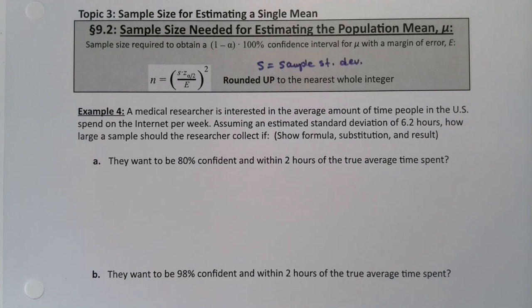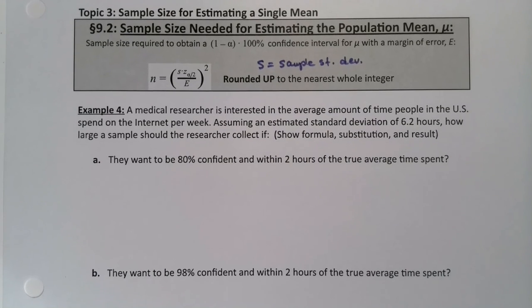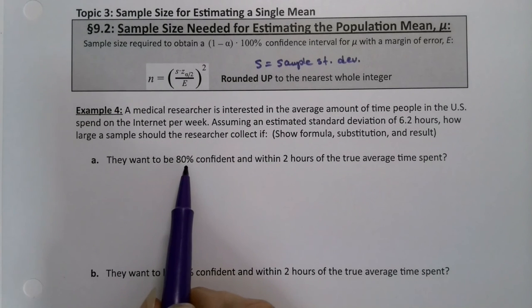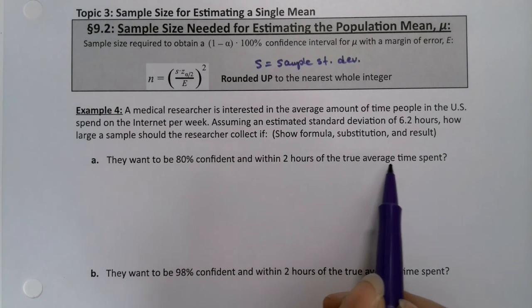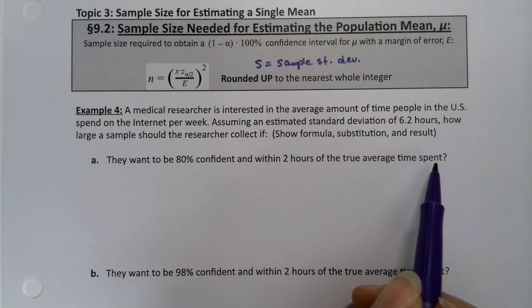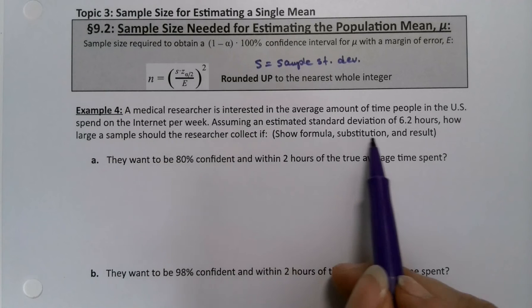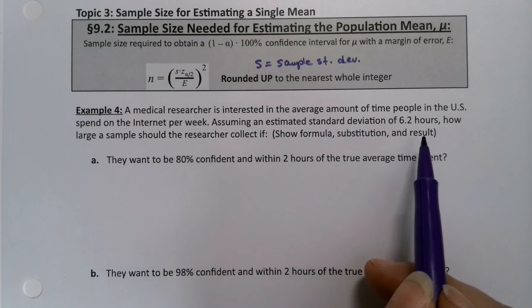A medical researcher is interested in the average amount of time people in the U.S. spend on the internet per week. Assuming an estimated standard deviation of 6.2 hours, how large a sample should the researcher collect if, and then we're going to show the formula substitution result just like always. And again, remember that those three little words, formula substitution result, does not mean it's a confidence interval question.